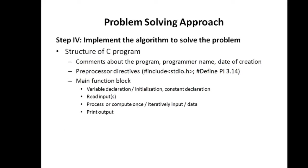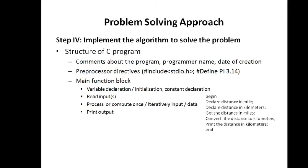We already discussed the structure of a C program, which includes comments, preprocessor directives, and the main function block. There is a slight refinement I have done in the pseudocode. The main function block includes variable declaration, constant declaration, read input, process data, and print output. I have now included the variable declaration part — declare the distance in miles and declare the distance in kilometers.